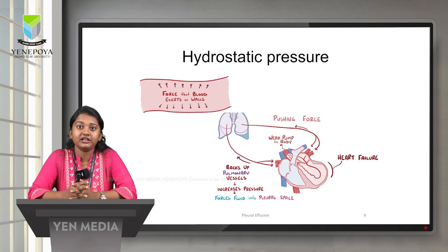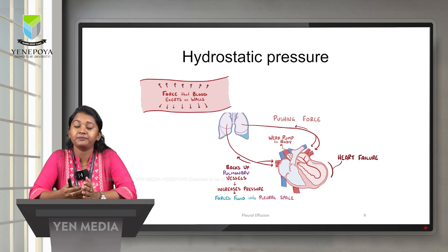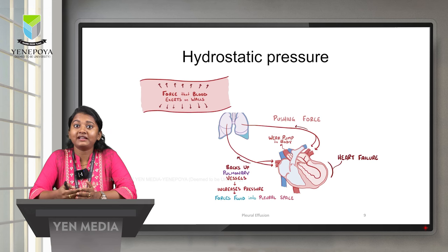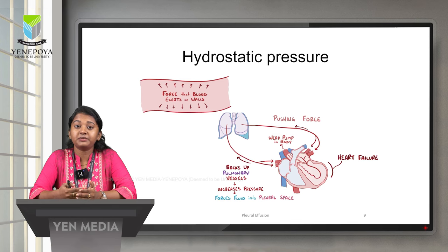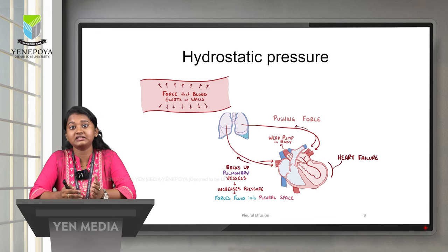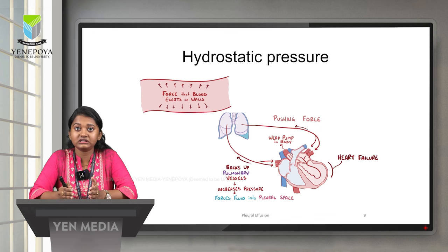In the case of heart failure, the heart is too weak to pump blood to the body. So all the blood backs up in the lungs. Backed-up blood in the pulmonary vessels causes an increase in pressure. When the pressure is increased, this forces fluid from the capillaries into the pleural space. This is how increased hydrostatic pressure causes pleural effusion.